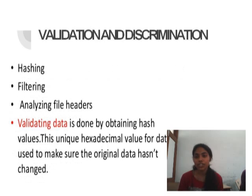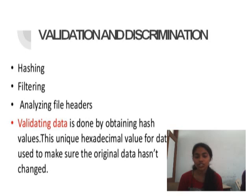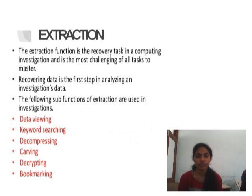Validation and Discrimination involves Hashing, Filtering, and Analyzing File Headers. Validating data is done by obtaining hash values — a unique hexadecimal value for data — which is used to verify that the original data has not changed.